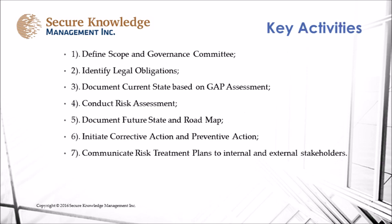Key activities: Number one, define scope and governance committee. Number two, identify legal obligations. Number three, document current state based on gap assessment. Number four, conduct a risk assessment. Number five, document future state and a roadmap. Number six, initiate corrective action and preventative action. Number seven, communicate risk treatment plans to internal and external stakeholders.